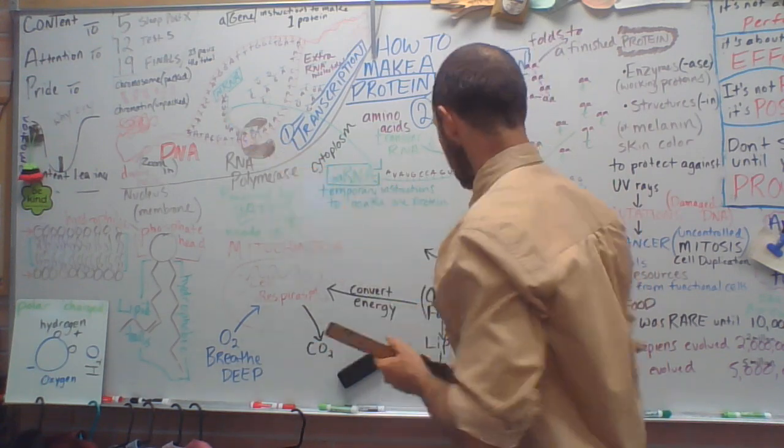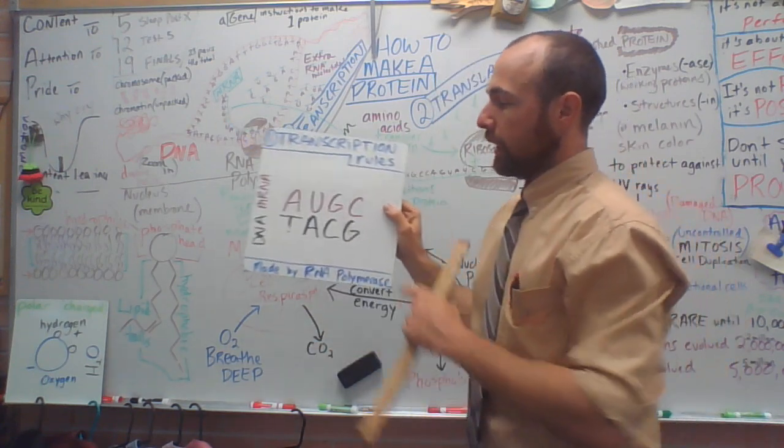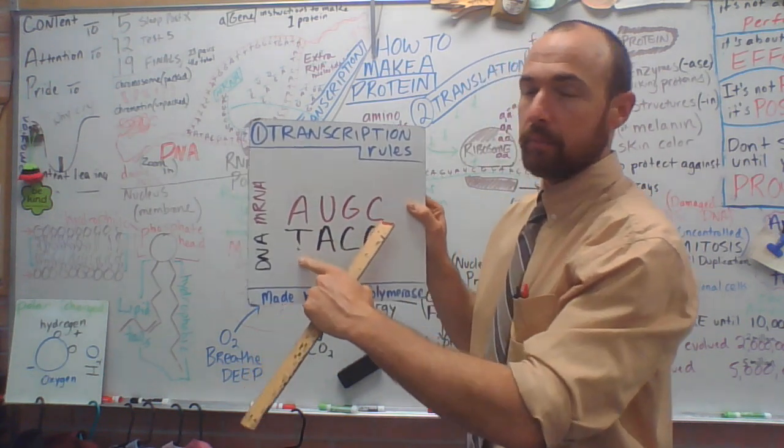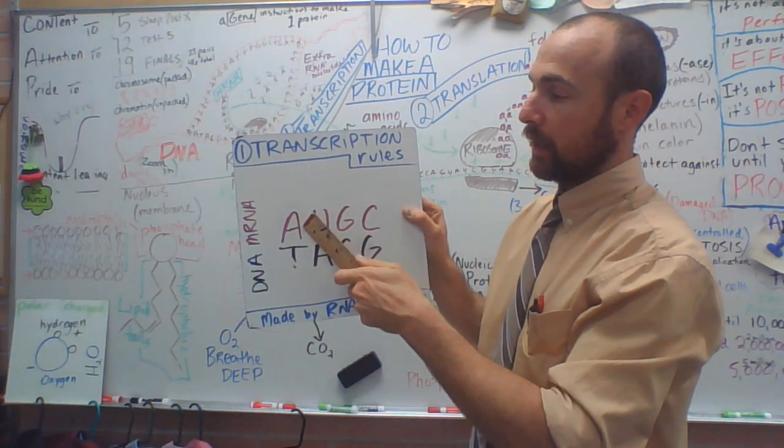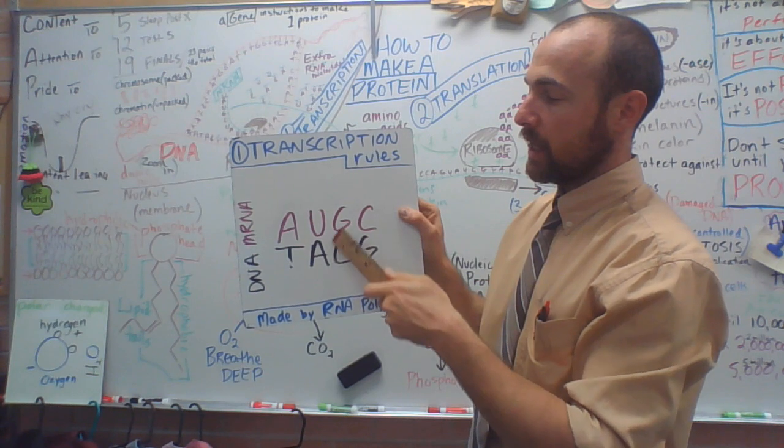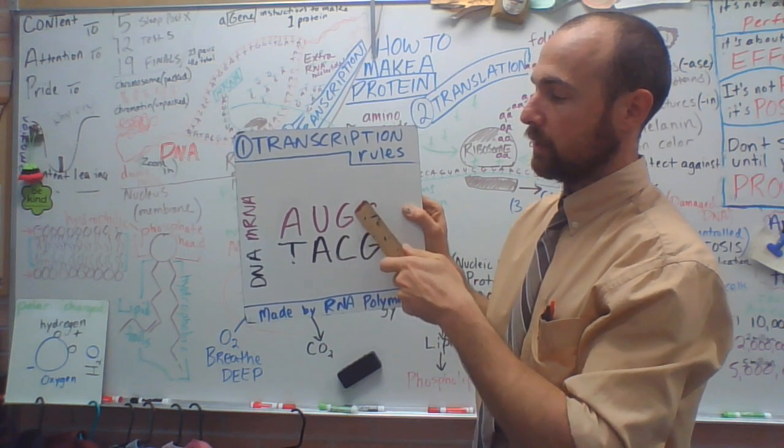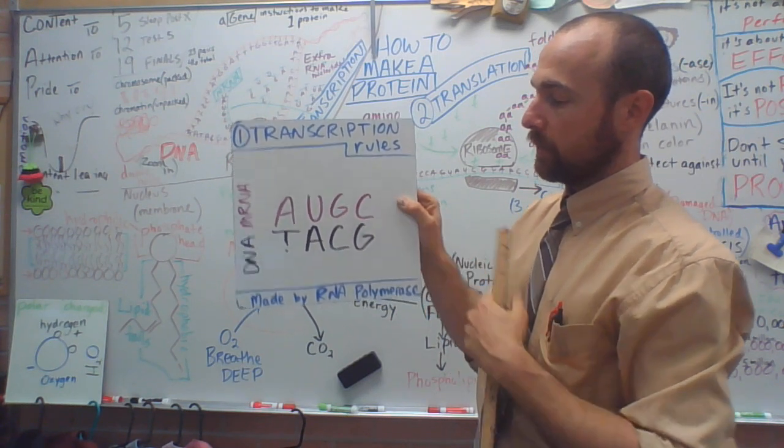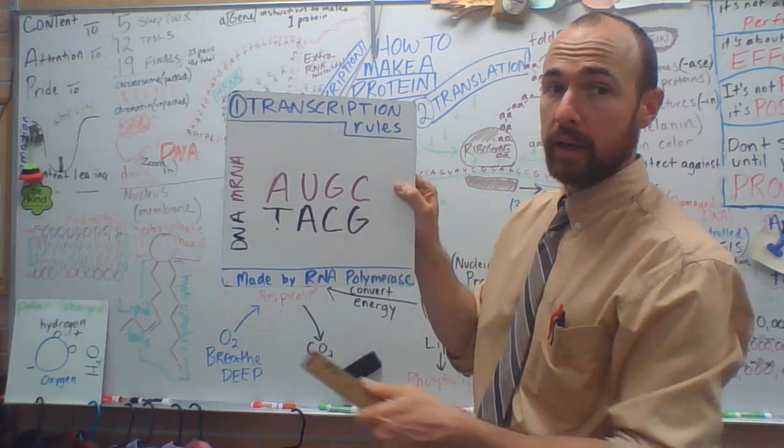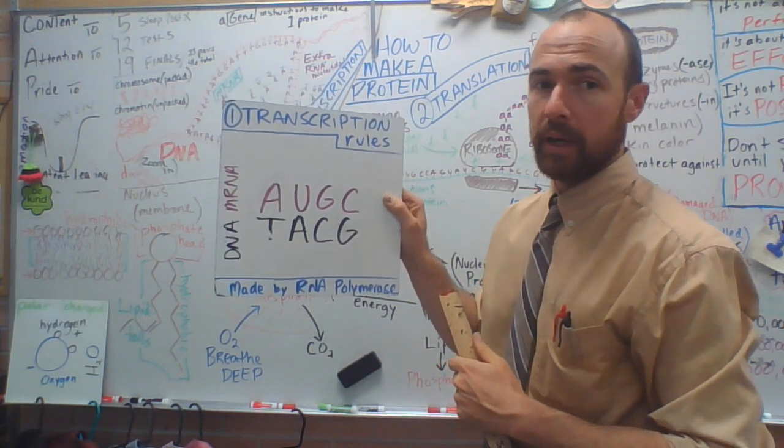So when that's being built, the transcription rules are if the DNA says T, the mRNA added is an A. If the DNA says A, it's U, C, a G, G, a C. And that is done by the RNA polymerase if it's powered by ATP.